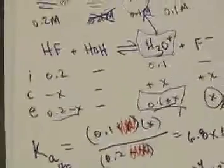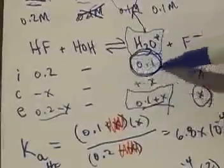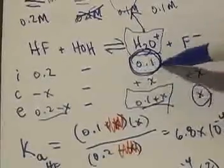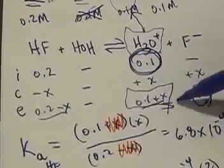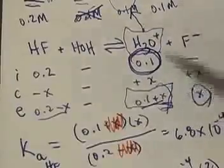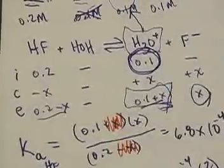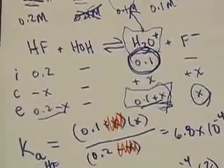Notice that the pH is almost entirely driven by the HCl concentration. The HF had very little effect on the pH — just a tiny bit, but not very much.